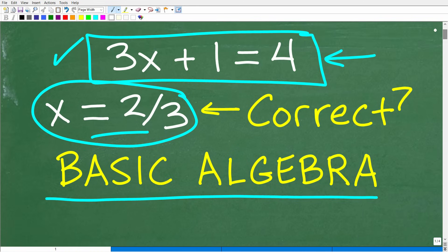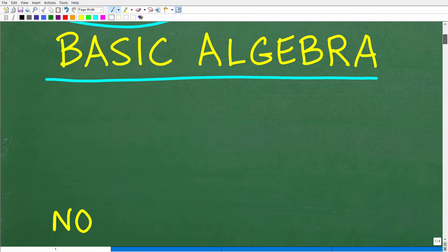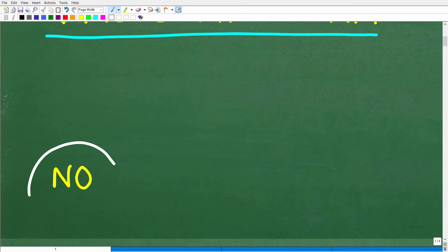Okay, so 3x plus 1 is equal to 4. Is x equal to 2 thirds? Is that the right answer to that equation? Well, the answer is no, it is not.